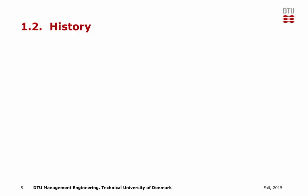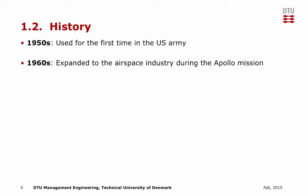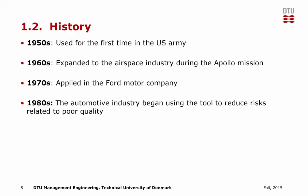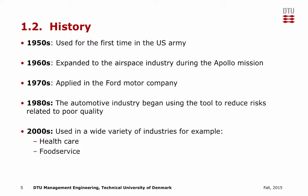The history of FMEA goes back to 1950, where it was first used in the U.S. armed forces. In the 1960s, its use expanded to the aerospace industry during the Apollo mission. In the 1970s, it was applied in the Ford Motor Company for the first time. In the 1980s, the automotive industry began using the tool to reduce risks related to poor quality. Since 2000, it has been used in a wider variety of industries, for example healthcare, food service, software, automotive, and more.